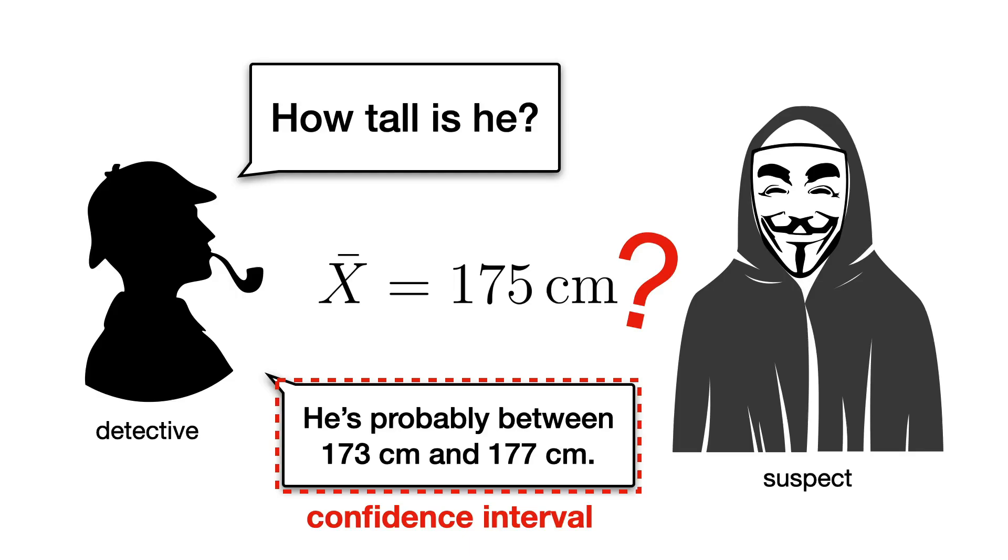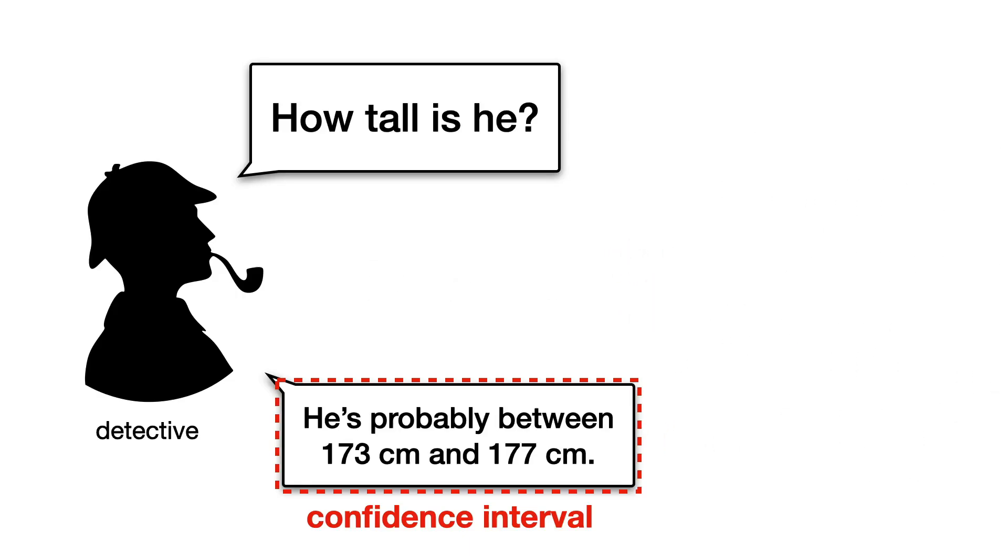In short, the confidence interval gives you a range of values where you are reasonably confident that the true population mean lies. It's basically like a safety net for your estimate. And how confident you are? That's up to you.